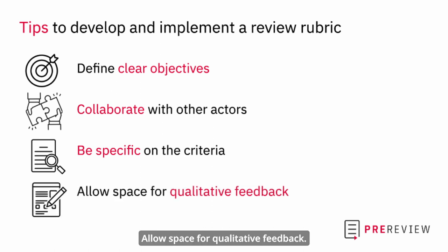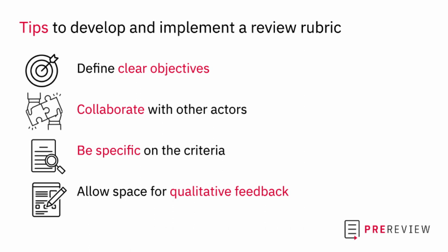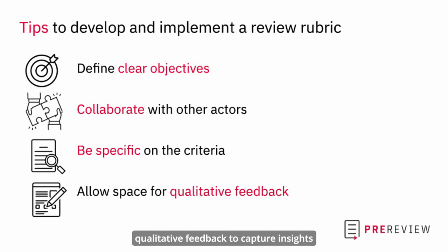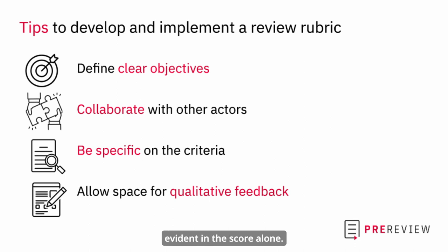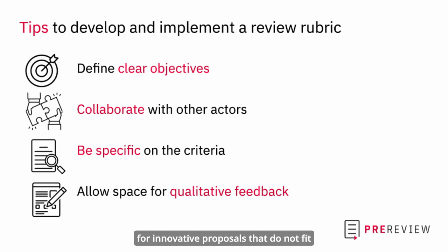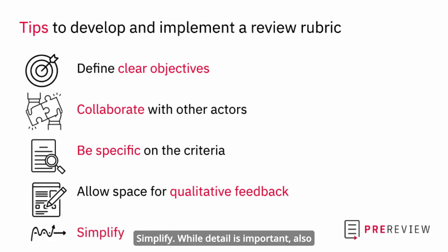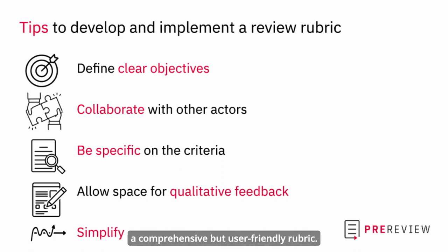Fourth, allow space for qualitative feedback: allow reviewers to add comments or qualitative feedback to capture insights that might not be evident in the score alone. These spaces can also help to account for innovative proposals that do not fit neatly into predefined criteria. Fifth, simplify: while detail is important, also aim for simplicity. An over-complex rubric can be cumbersome to use — aim for a comprehensive but user-friendly rubric.